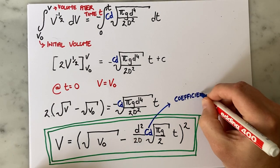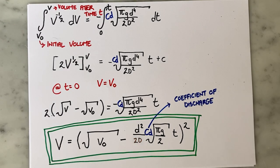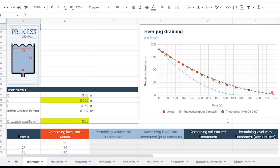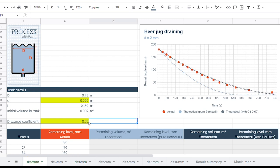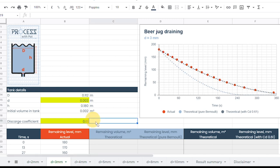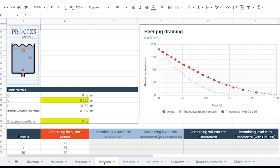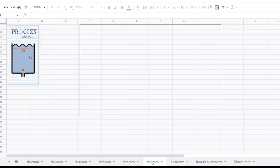If I now account for this in my spreadsheet, I can see that the discharge coefficient is between 0.58 and 0.66, meaning the flow is between 58 and 66 percent of what I predict with Bernoulli. I didn't do any fancy curve fitting, I just kept manually changing the cell until the curve looked good as you can see me doing here.